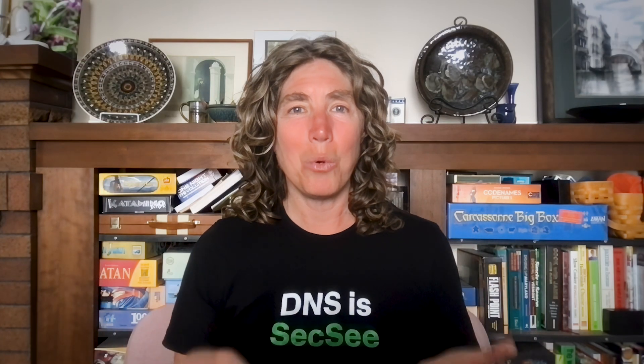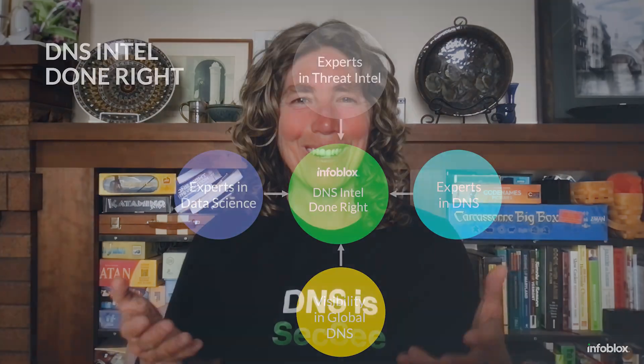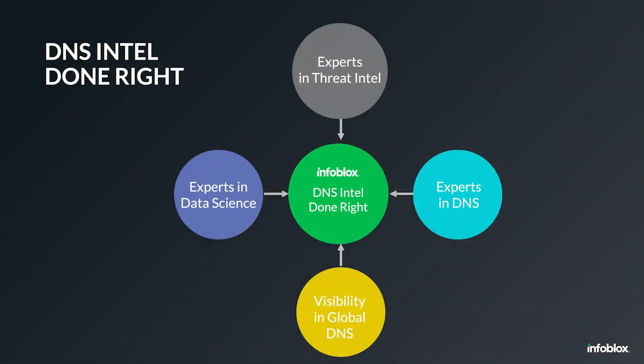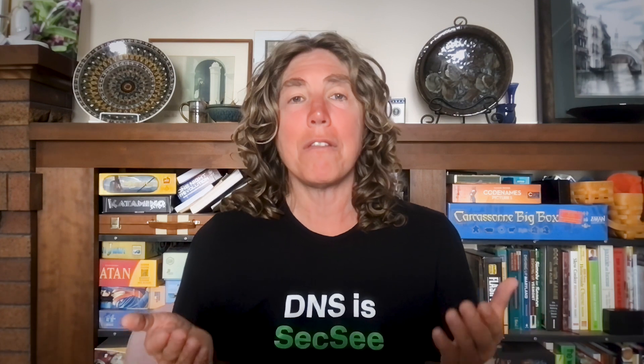So what are the pieces needed to do DNS intel right? It's very similar to the data science diagram you frequently see. For good DNS-based intel, you need expertise in threat intelligence — you need to understand the threat landscape and how it manifests in DNS. You need to be experts in data science, because DNS is by its very nature a big data problem, and if you don't understand data science you will not be effective at large-scale DNS threat intelligence. You need to be experts in DNS itself, which is known to be an extraordinarily arcane topic — subject matter experts frequently argue about the correct response from a DNS resolver for a specific query, and there are thousands of pages of documentation.